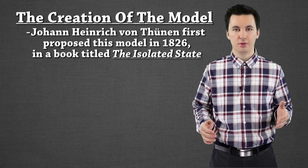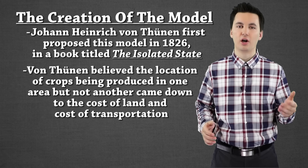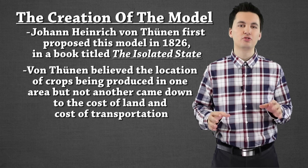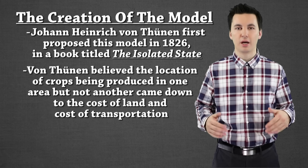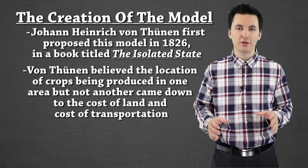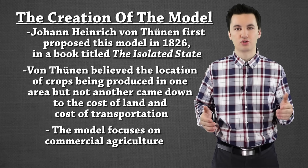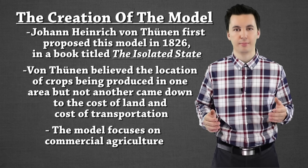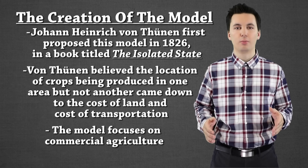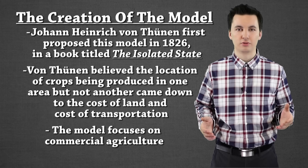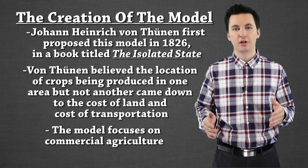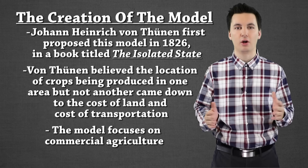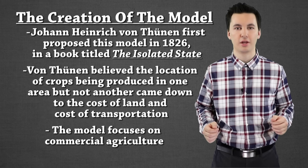The model was based on a couple of different things: the cost of the land and also the cost of transportation to the market. Von Thunen believed that farmers were motivated by profit, so when we're looking at this model, we're looking at commercial agriculture — farmers who want to make money. We're also looking more at the developed world; Von Thunen is focused more on the European Germanic diet, not looking at all societies within the world today.